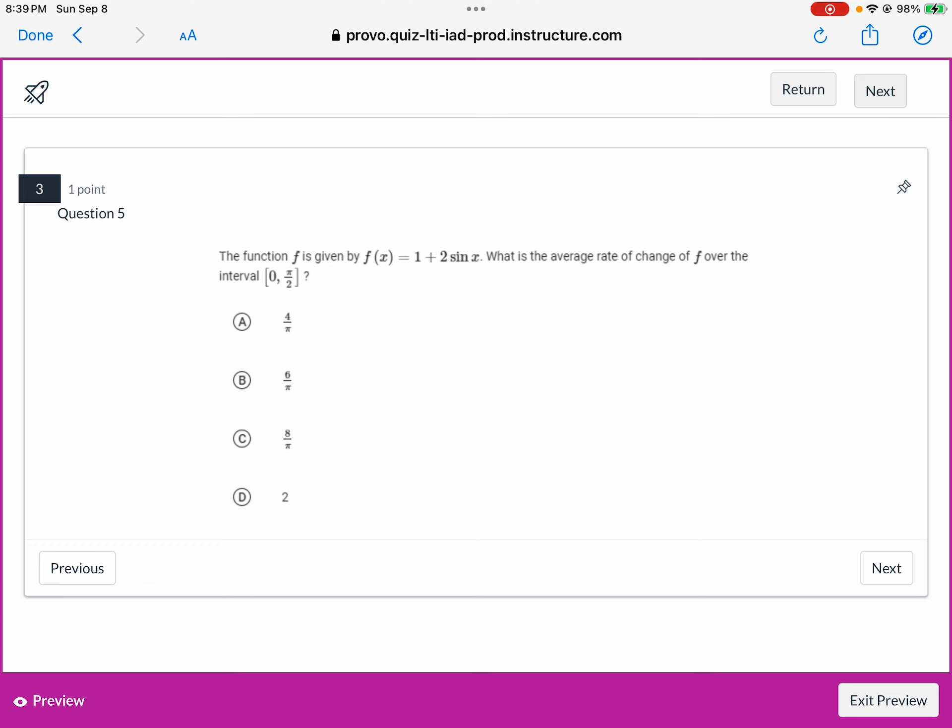The function f is given by, this time we're given a function, the equation of the function, and we're trying to find the average rate of change over the interval from 0 to pi halves. So this is a non-calculator one, and you can do this without your calculator. You just need to plug in pi halves and 0 into sine of x right there, but that's how you get your y value. So you need to get your y values by plugging in pi halves and 0 into the function, and then just calculate the average rate of change.